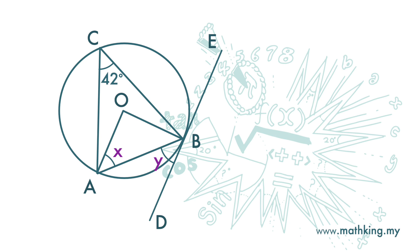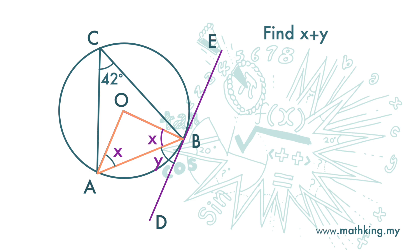Line DE touches the circle at point B only. Find X plus Y. Line DE is a tangent to this circle, and OB is a radius of the circle. In that case, the angle here is 90 degrees. Line OA and line OB are both the radius of this circle, so this triangle is an isosceles triangle. This angle here is equal to X. And we have learned that the angle here is 90 degrees. So angle X plus angle Y is 90 degrees.